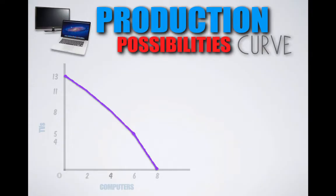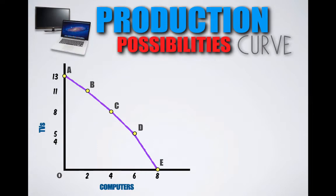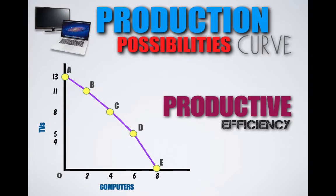Think of it as a visual representation of what they possibly can produce if they use all their resources efficiently. This production possibilities curve, or PPC for short, is comprised of each of the production possibilities for Country B, and so represents the full capacity to which Country B can produce. They cannot produce beyond this curve given their current resources. Each of these production possibilities represents productive efficiency for Country B, meaning they are producing TVs and computers to their full potential without wasting any resources.